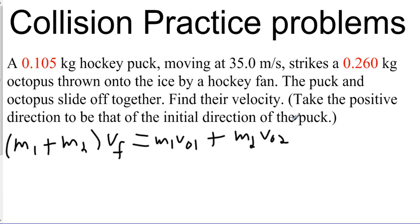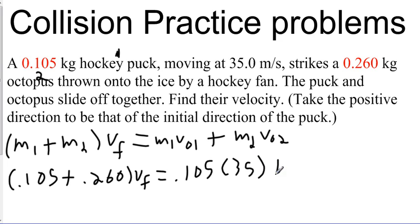And so now we just need to plug things into the equation. So we can say our hockey puck is going to be our first mass, and our octopus will be our second mass. And so we can say 0.105 plus 0.260 times vf, which is what we're looking for, is equal to 0.105 times 35 plus 0.260 times 0, since it's at rest.